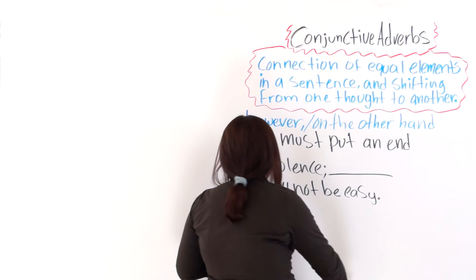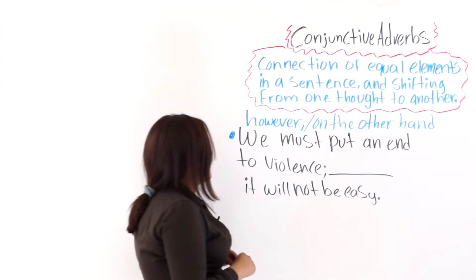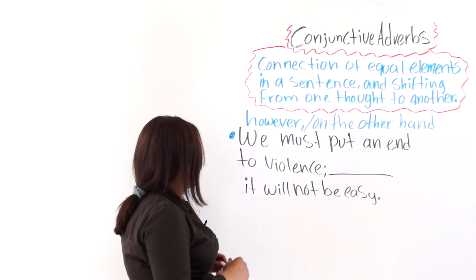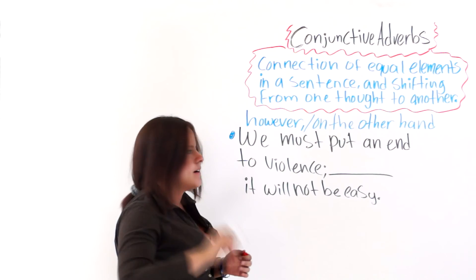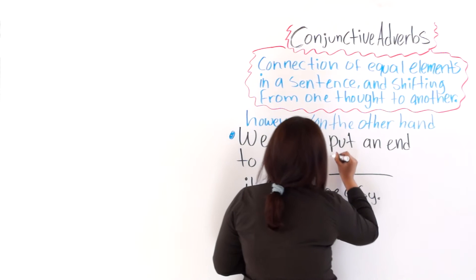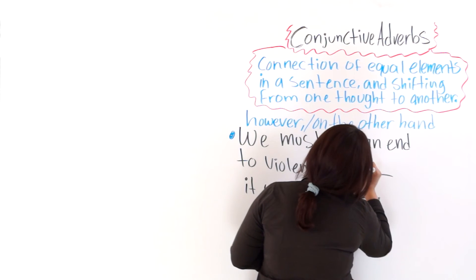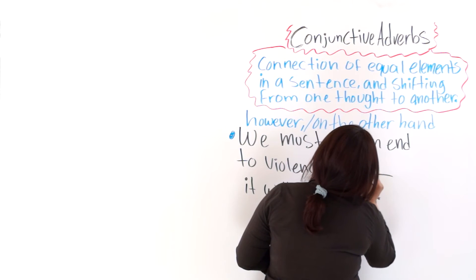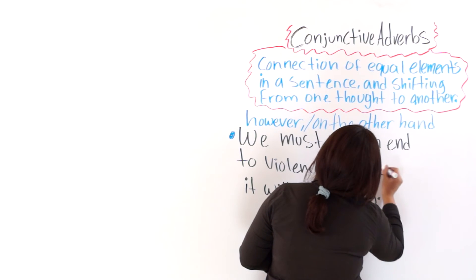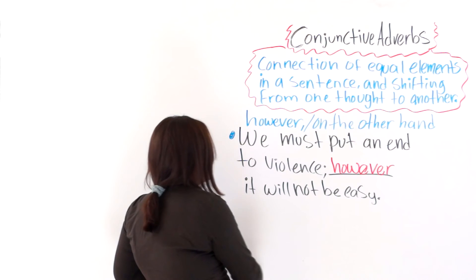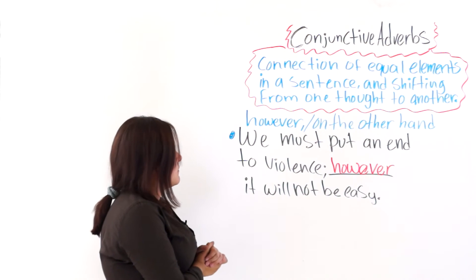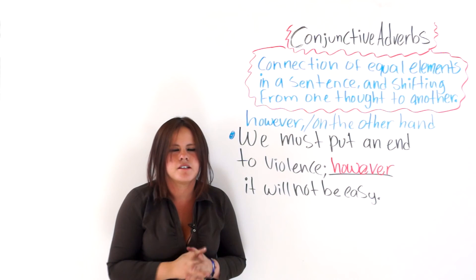So we must put an end to violence. Blank, it will not be easy. Which one do we use? However, right? So as you can see, we are shifting from one thought to another using a conjunctive adverb, and we are also connecting equal elements in a sentence.